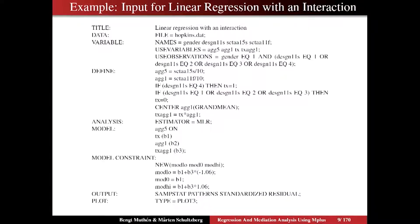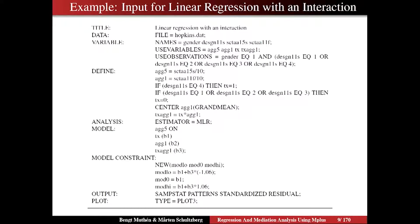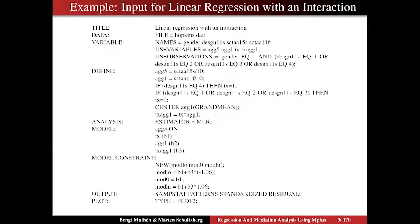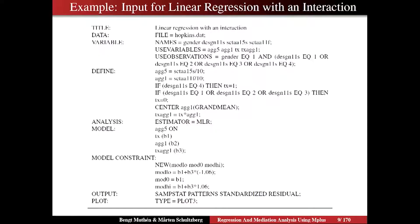We create the interaction variable TXAG1, which is simply the product of the two variables. We always center ag1 before creating the interaction variable — we never center the interaction variable itself. In the analysis command, we specify the estimator. The default estimator is maximum likelihood in Mplus, but here we use MLR — maximum likelihood robust — which gives us robust standard error estimates. It won't affect the point estimates, but makes the standard errors robust against some forms of non-normality and model misspecification. In this case, ag5 is a very skewed variable, so that's why we use it.